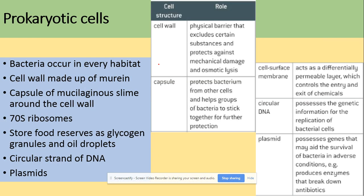In terms of prokaryotic cells, bacteria will occur in every habitat. Cell wall is made of murein, so that's important. A capsule of mucus-like murein slime around the cell walls. We've got 70S small ribosomes, stored food reserves as glycogen molecules and oil droplets, and we've got circular strands of DNA and plasmid.